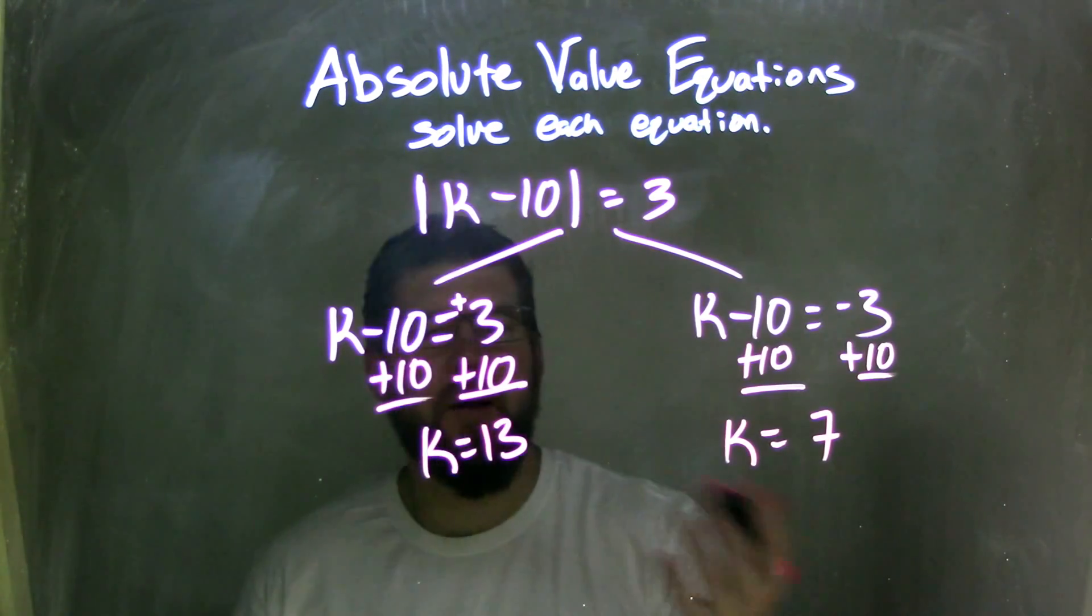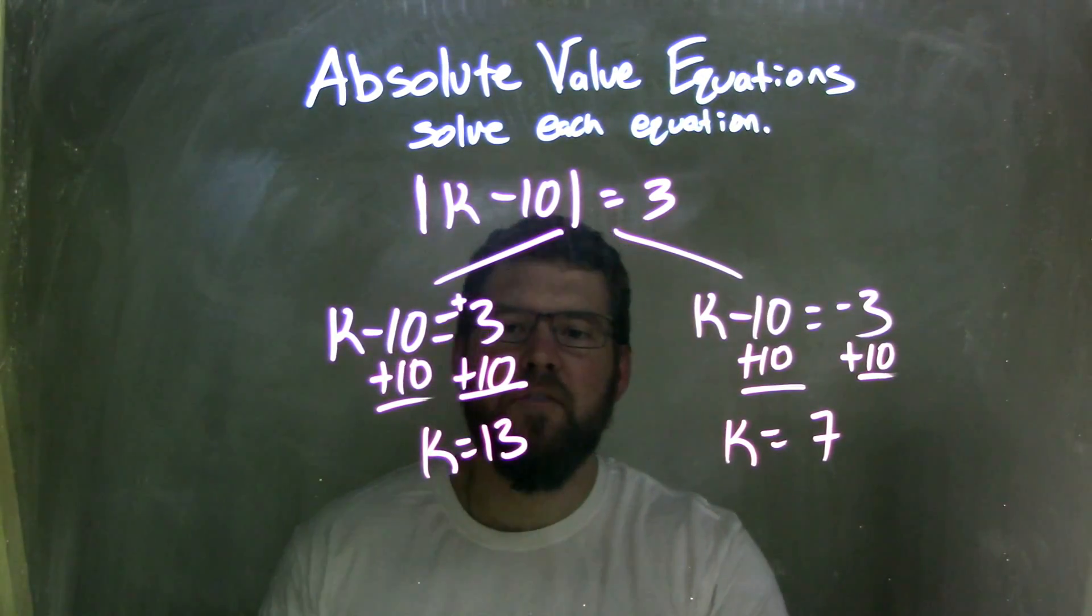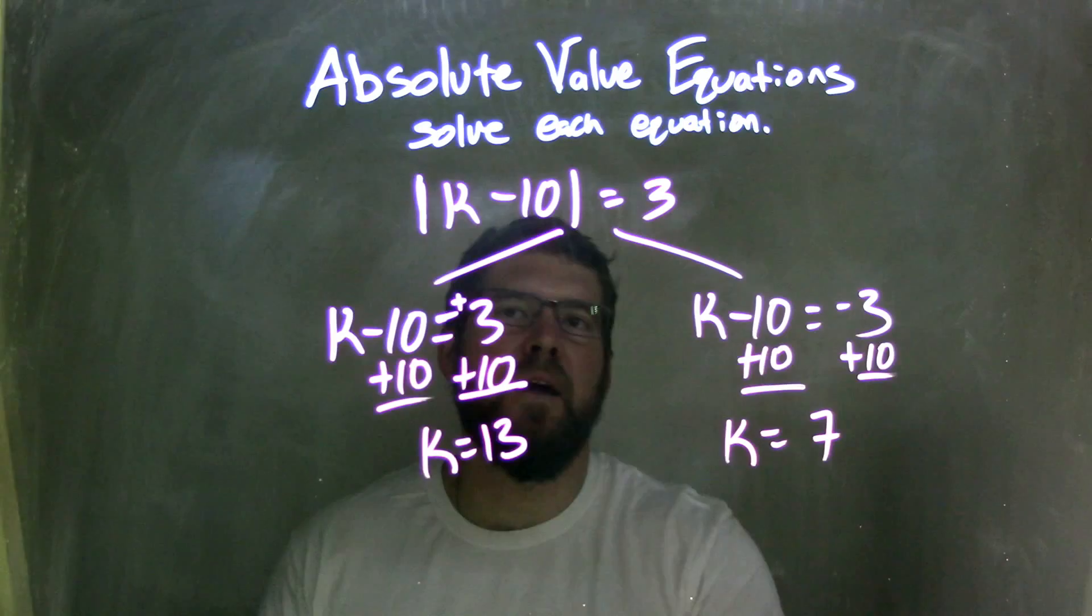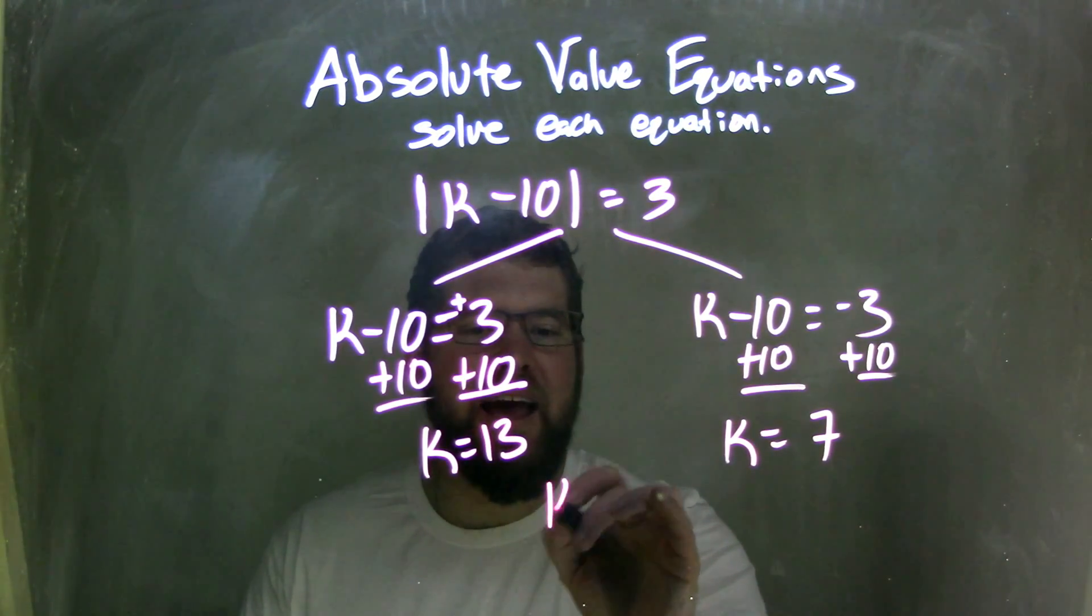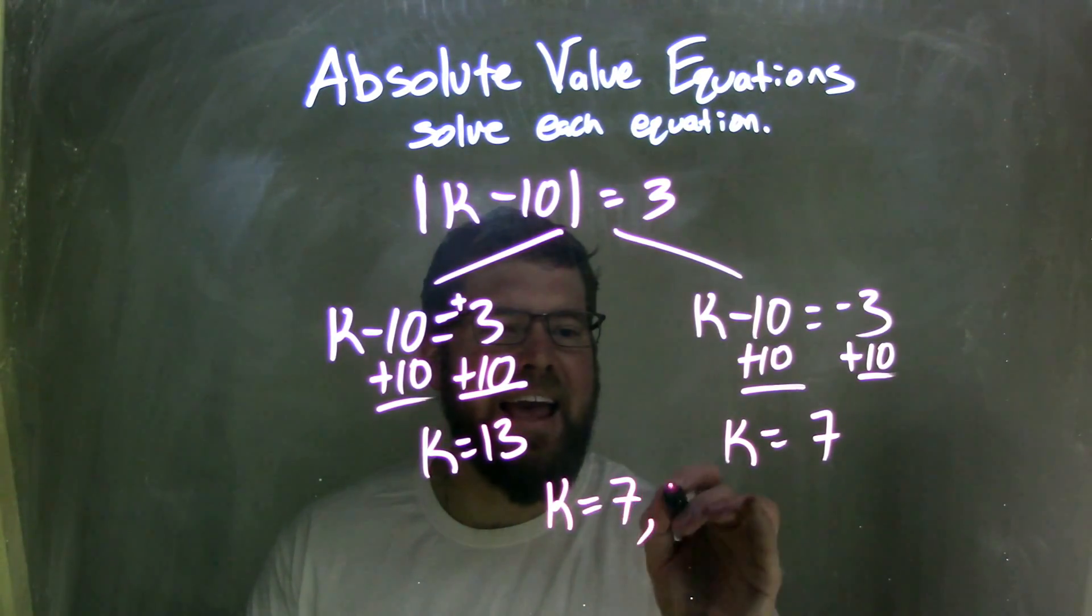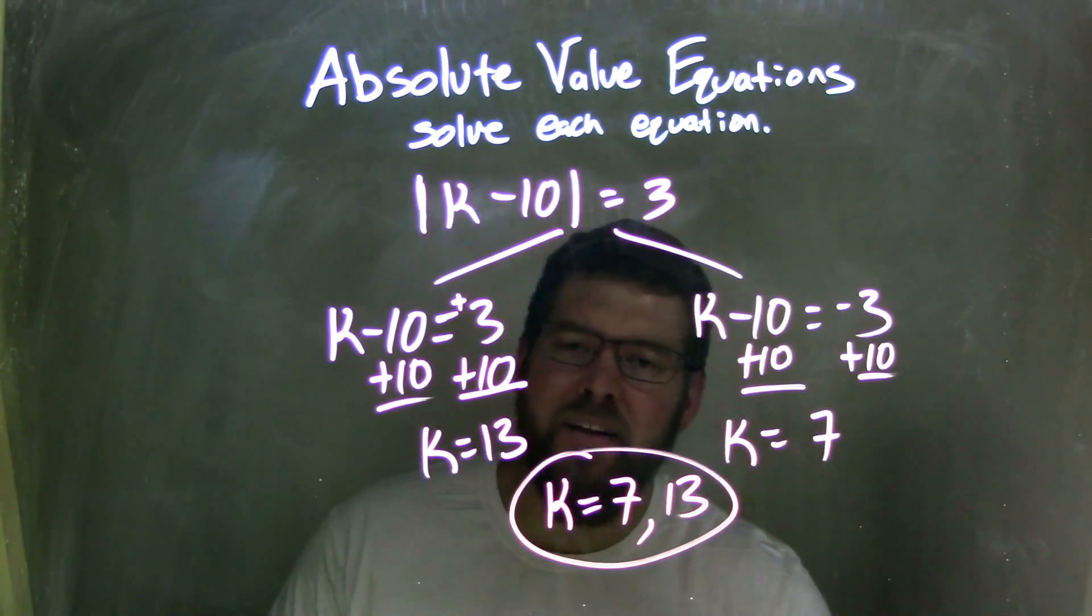And so when I write my answers, I usually like to write at least the greatest. And so the two values that k can be in this equation are k equals 7 and 13. And that's our final answer.